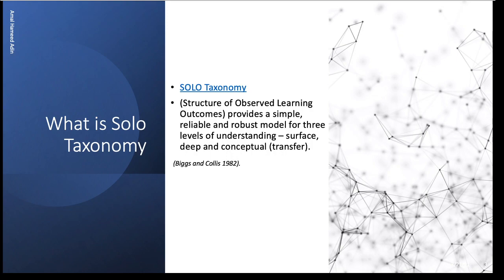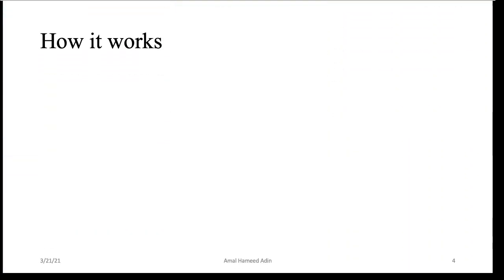Now to understand the structure or the taxonomy, we're going to talk about how it works. It starts with the pre-structural level of understanding that means there is no understanding—the learner has no idea about the topic. Then unistructural level of understanding means that the student has only one information, one idea about the topic.